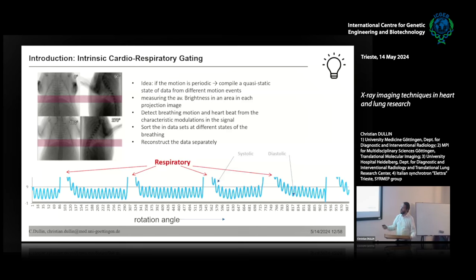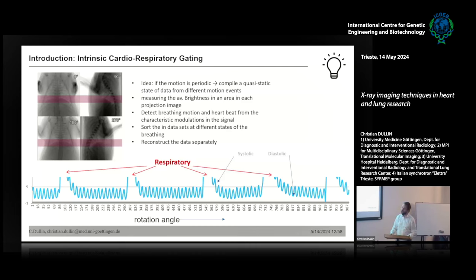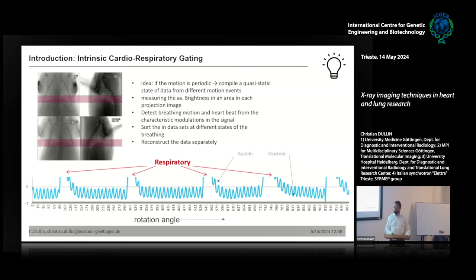If you measure the intensity in a region over time and across the rotation, you can see the signal: the huge peaks are from breathing and the tiny variations are the heartbeat. You can split the data into multiple sets — either for the lung or for the heart. If you have enough data, acquired at a higher dose than for a static object, you can reconstruct different steps in the breathing cycle or the heart cycle. Keep in mind this is compiled from many different heartbeats, so if the heart beats irregularly there's another small problem — but it works.